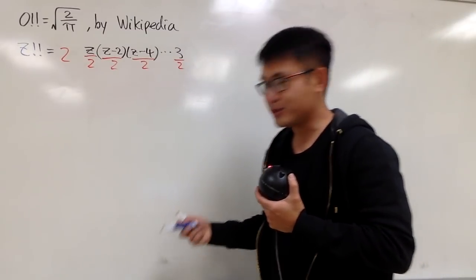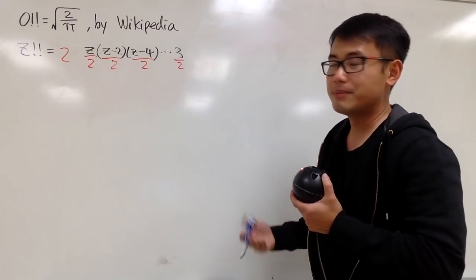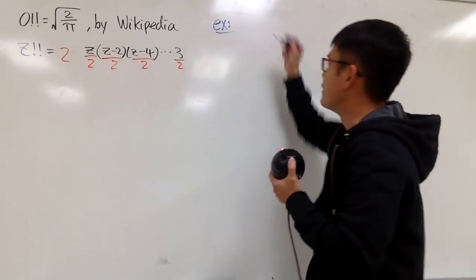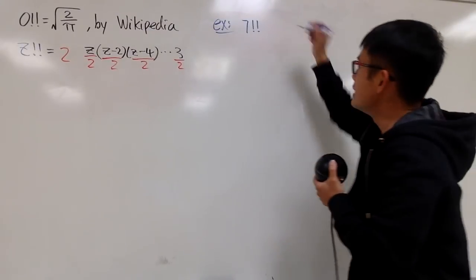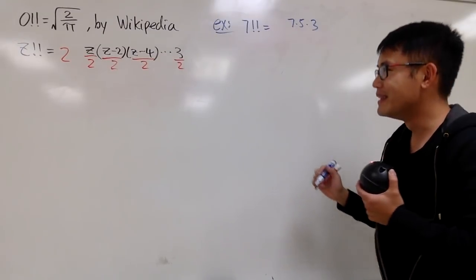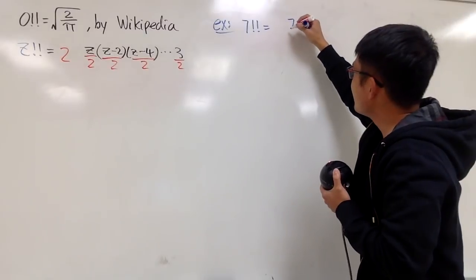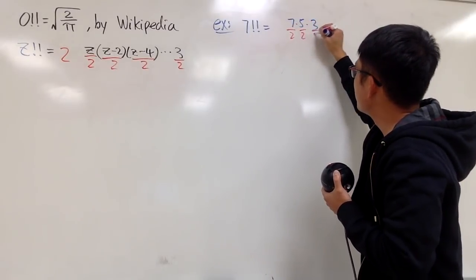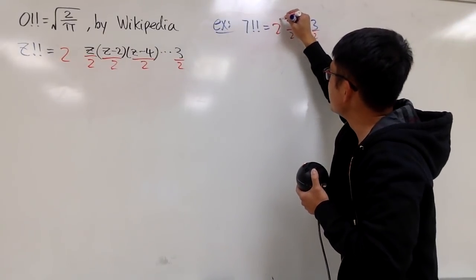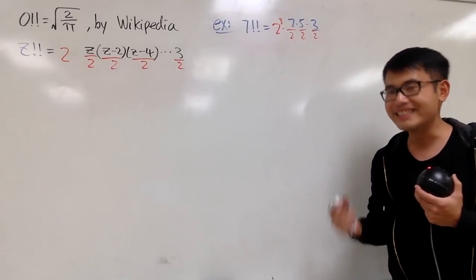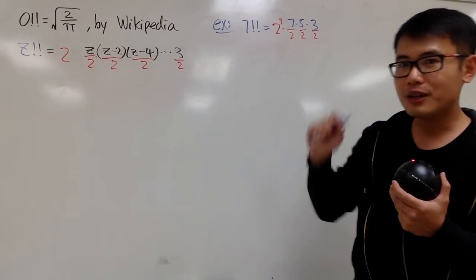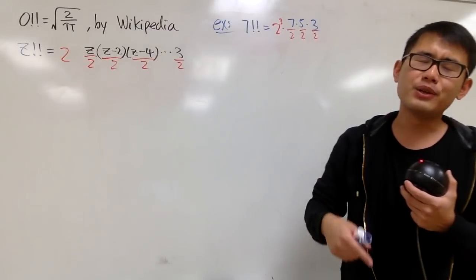The best way to do this is with an example. Suppose Z is an odd number, let's say 7. Let's take a look at 7 double factorial. This means 7 times 5 times 3. We don't go to 1 because we are just following that rule. We are going to divide each and every number by 2. We are dividing 3 twos, so we have to multiply by 2 to the third power to maintain the same value. Now, how do we get 3 from 7? Well, 7 minus 1 is 6, and 6 divided by 2 is 3.